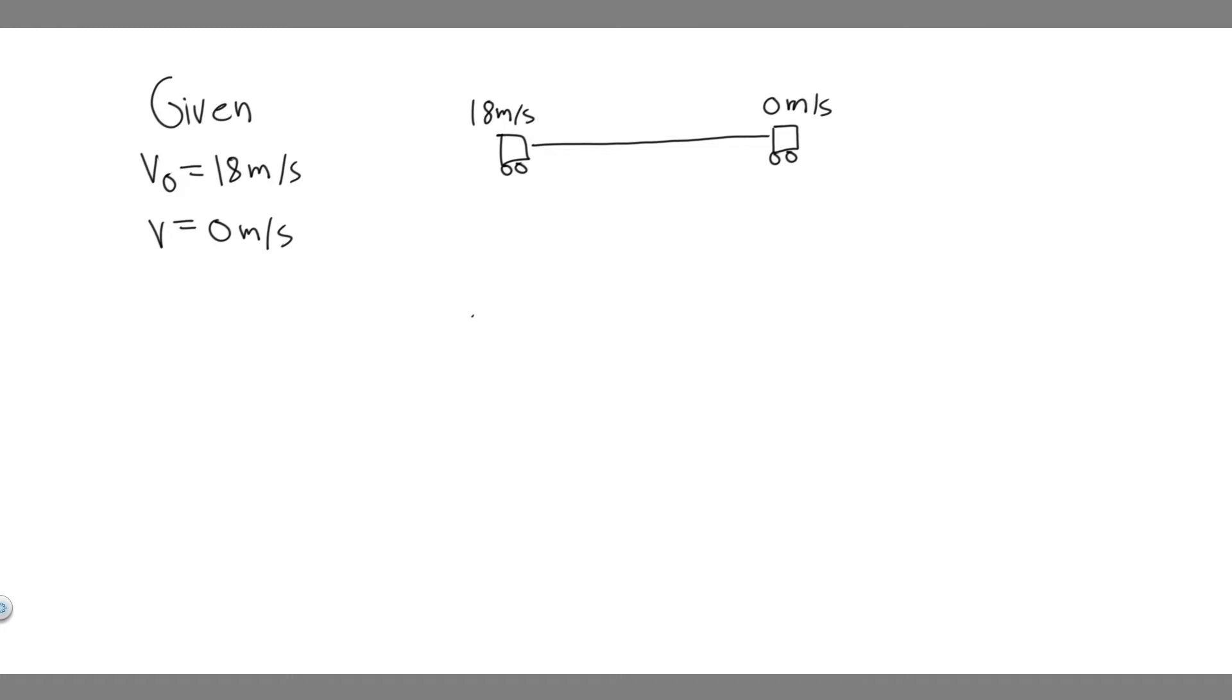So what's going on here? Basically, we're traveling in this car at 18 meters per second, we see a stoplight, and then we're going to slow down all the way to 0 meters per second. And so what we're trying to do is find average velocity.